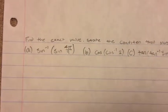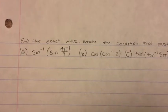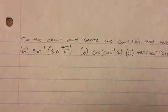Find the exact value, state the condition it must be satisfied. For the first one, inverse sine, sine 4 pi over 9.